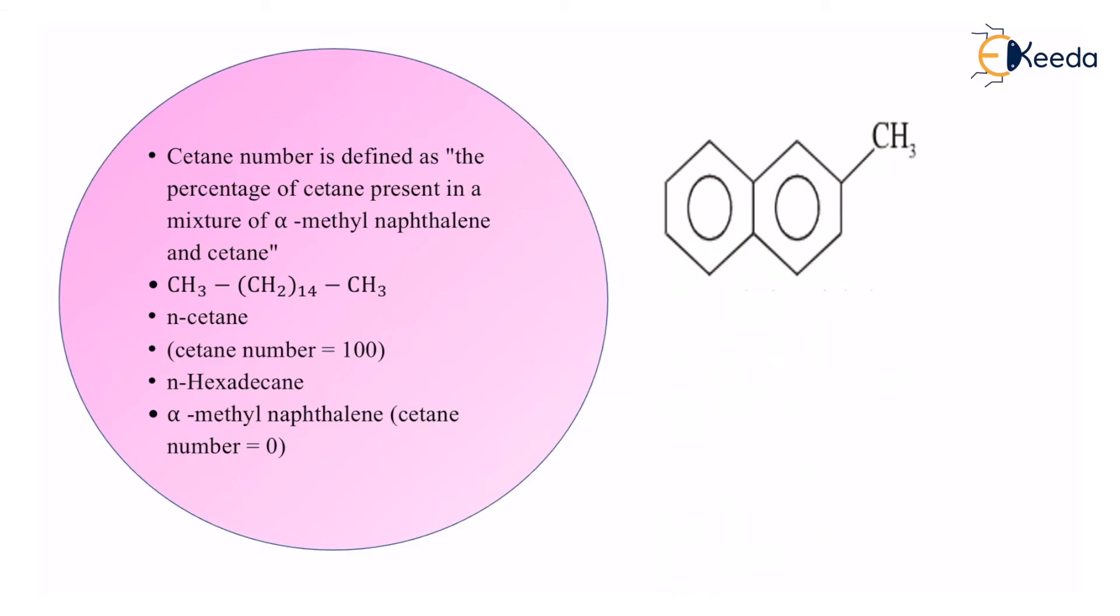If you see the structure, this structure is of alpha-methyl naphthalene. Aromatic compounds have very low knocking property. They are quite safer to use than aliphatic compounds, and alpha-methyl naphthalene is an aromatic compound.